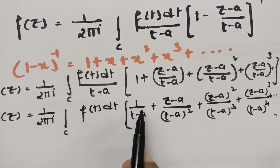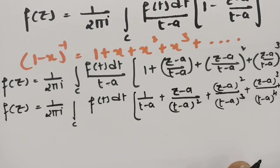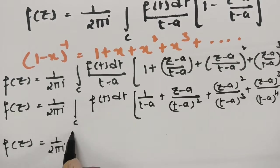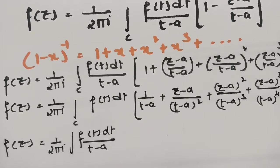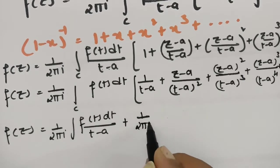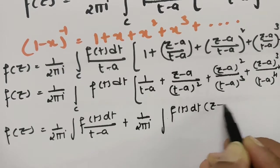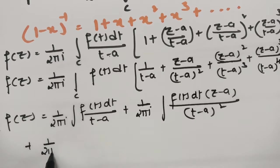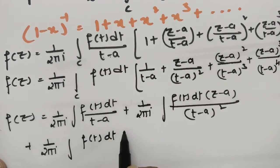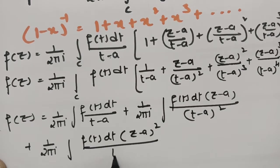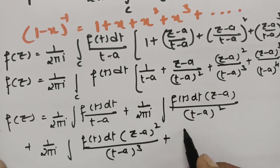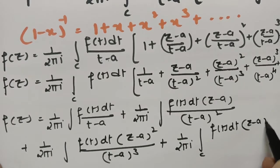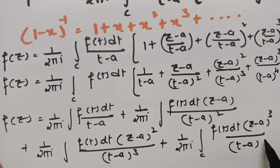Now I am going to give this integration to each and every term. So f of z equals 1 by 2 pi i integral c f of t dt by t minus a, plus 1 by 2 pi i integral c f of t dt multiplied by z minus a by t minus a whole squared, plus 1 by 2 pi i integral c f of t dt multiplied by z minus a whole squared by t minus a whole cubed, plus 1 by 2 pi i integral c f of t dt multiplied by z minus a whole cube by t minus a power 4.